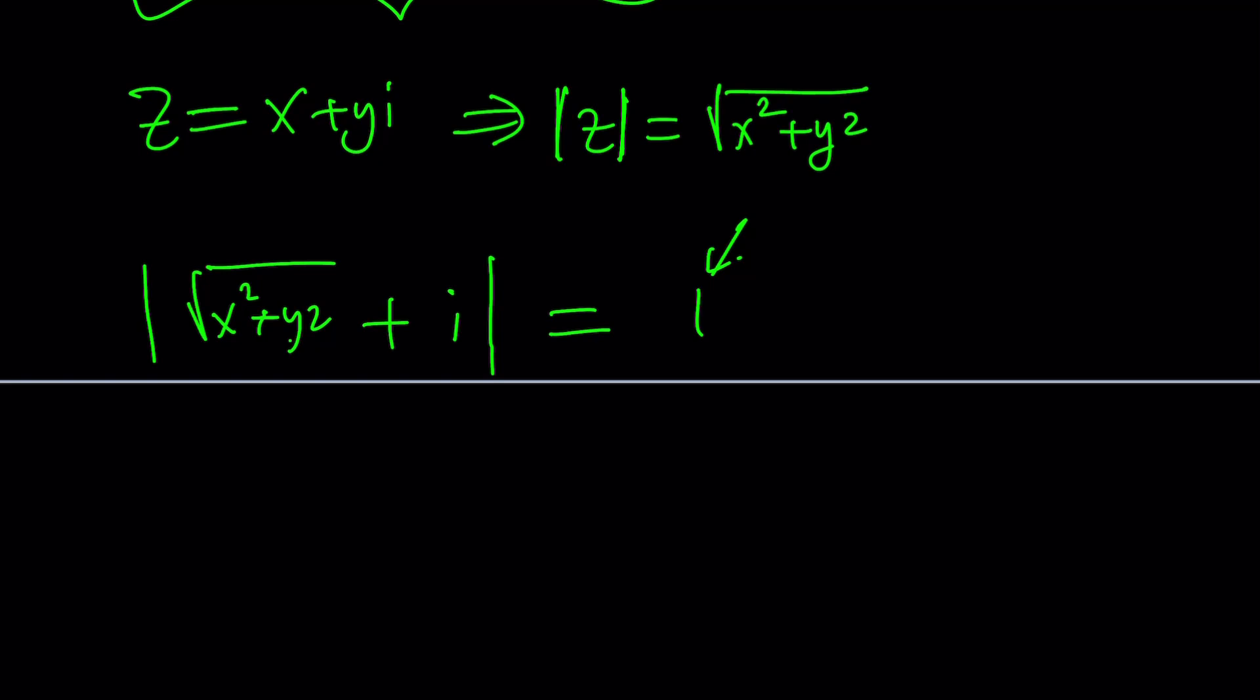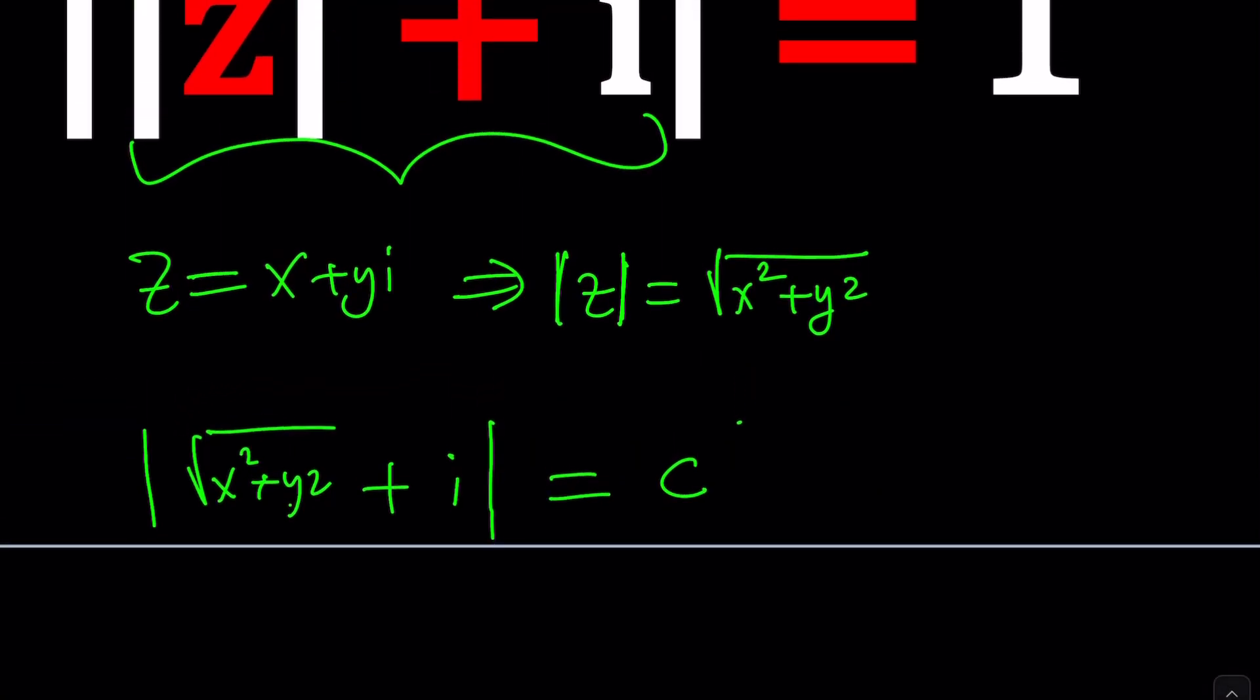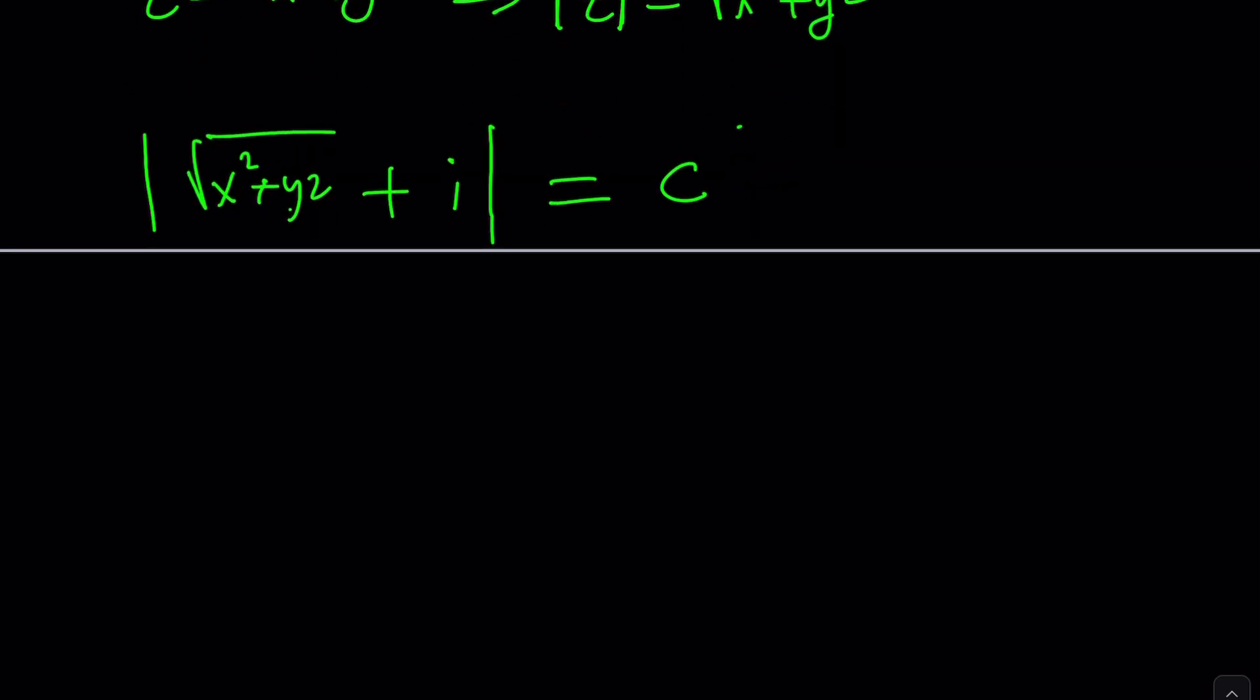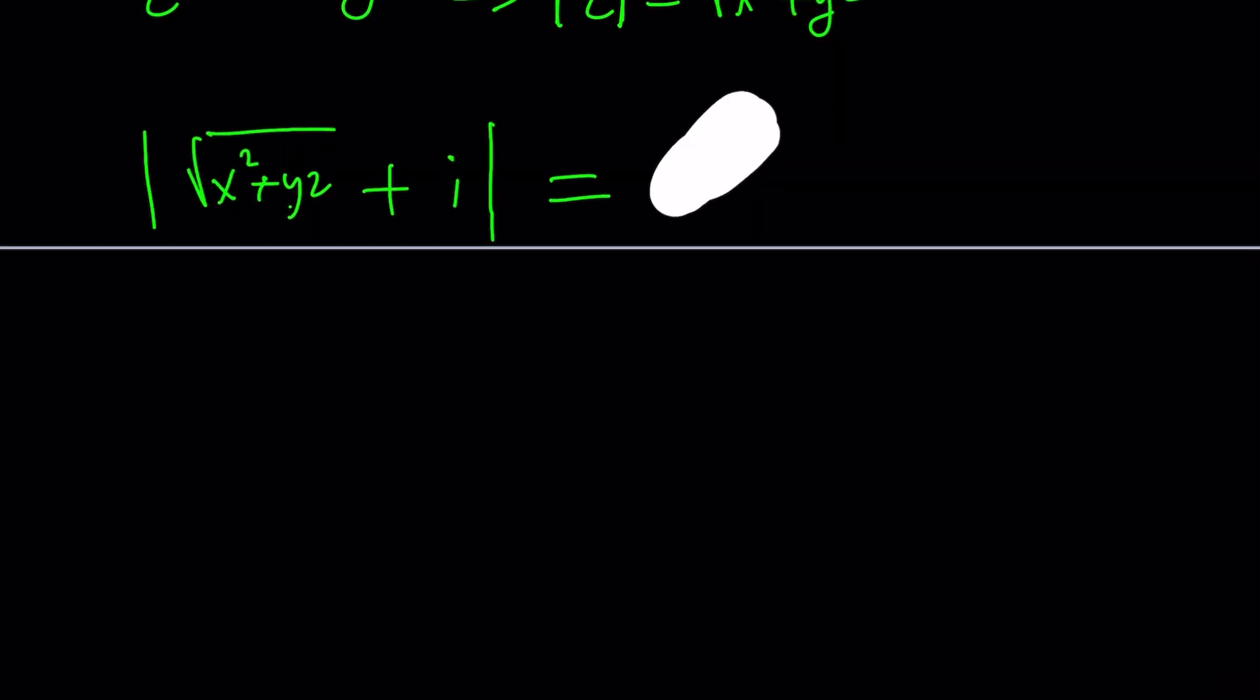Particularly if you set it equal to a constant C. Maybe under certain conditions you won't even have a set, and you can talk about for which C values we have this many solutions. Alright. Anyways, in this case we're not worried about C, we're worried about 1.